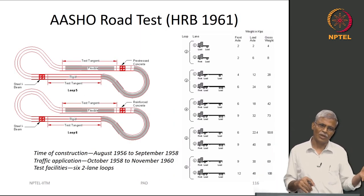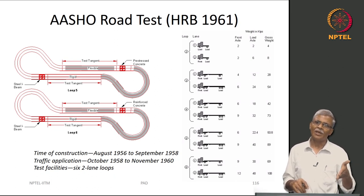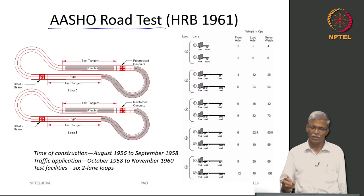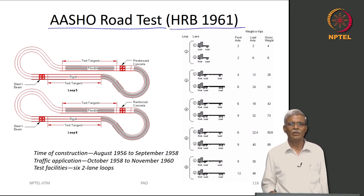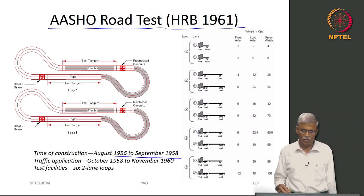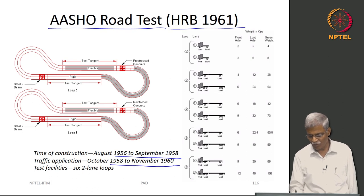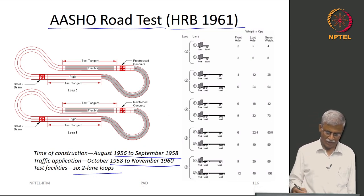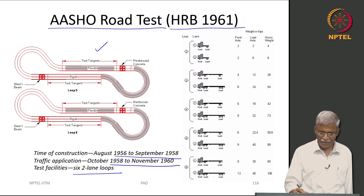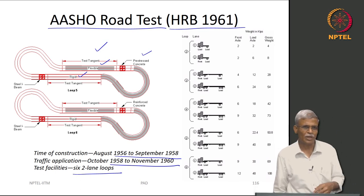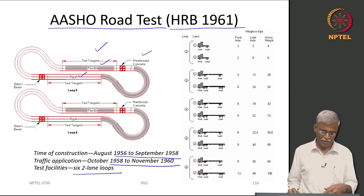The starting point for all these things is the AASHTO road test. There is a detailed Highway Research Board bulletin from 1961 in which all these details are provided. Construction was between 1956 to 1958, traffic application was from 1958 to 1960, and the test facilities included 6 two-lane loops. You can see a test tangent with a pre-stressed concrete section, flexible pavement, and rigid pavement — though we noted we prefer the terms bituminous and concrete rather than flexible and rigid.